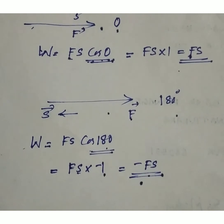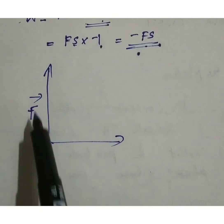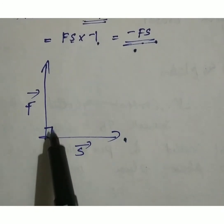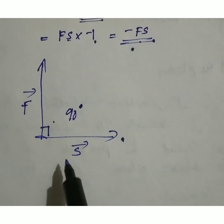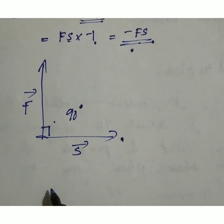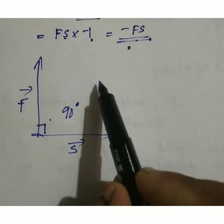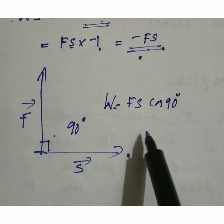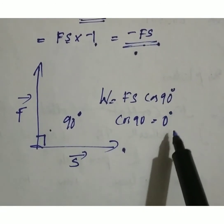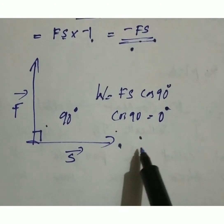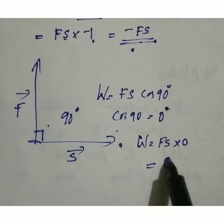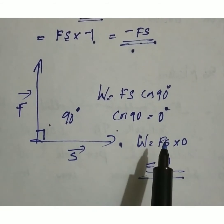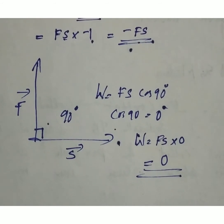When force and displacement are perpendicular to each other — for example, if force is acting in the upward direction and displacement is in the horizontal direction — the angle between them is 90 degrees. In circular motion, force acts towards the center and displacement is along the tangent, so the angle is 90 degrees. We write W equals Fs cos 90, and since cos 90 equals 0, work done is zero.